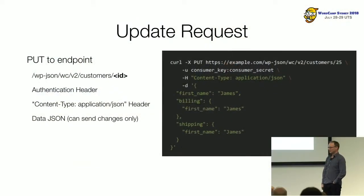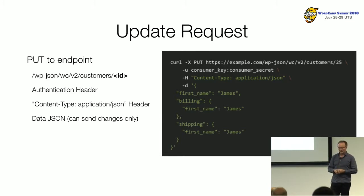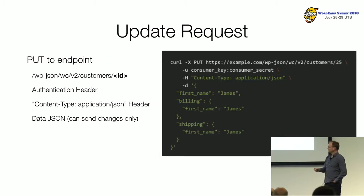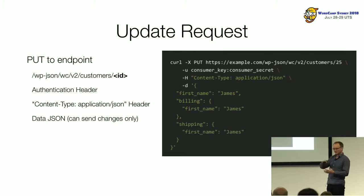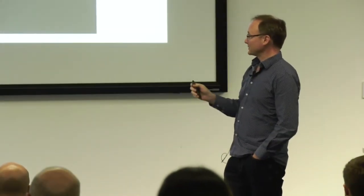An update request is very similar to a create request, except this time you're doing an HTTP PUT. In the API world, POST is normally create a resource, PUT is normally update a resource. This is where you need to know the ID, because you append it to the end of the URL. You authenticate in the same way, include the Content-Type header, and send a JSON payload. The difference is you only have to send the changes — you don't have to send the full record. In our business we often just send the whole thing again rather than working out the delta, but if we want to update just the status of an order, we send up just the status.